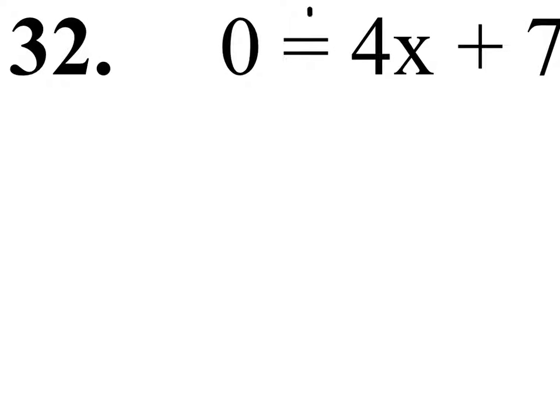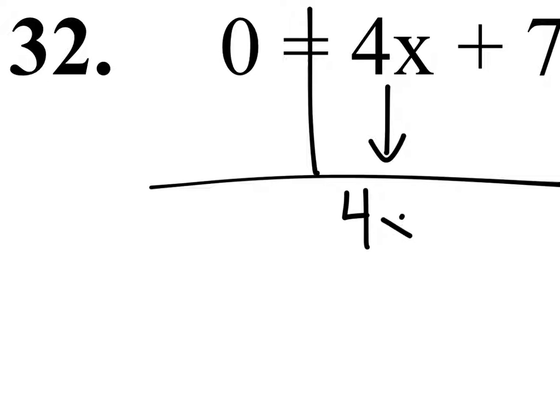All right, on number 32, again, the objective on this is always going to be the same. We have the 4x, all the x's on one side of the equal sign already.